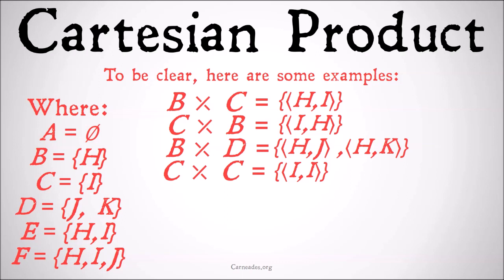The Cartesian product of C and itself is just the class of the ordered pair I and I, because those are the only members of C. The Cartesian product of E and D is going to be equal to the class of the ordered pair H, J, the ordered pair H, K, the ordered pair I, J, and the ordered pair I, K.